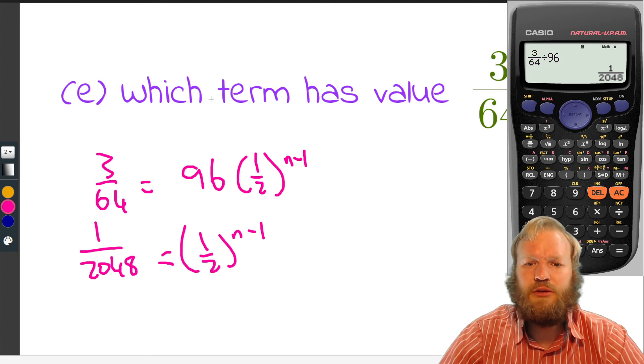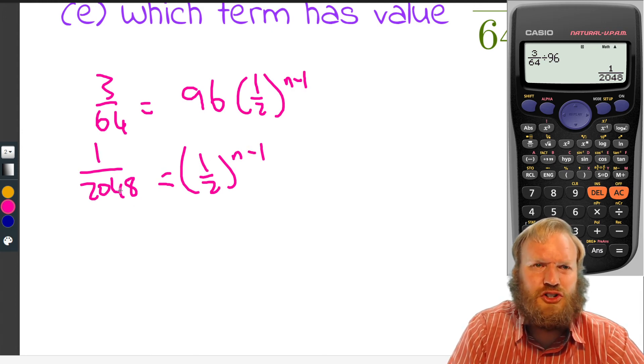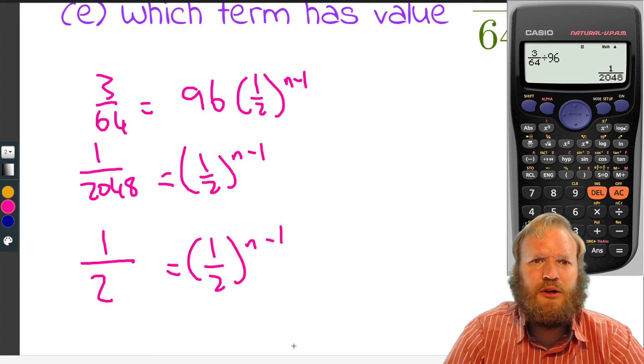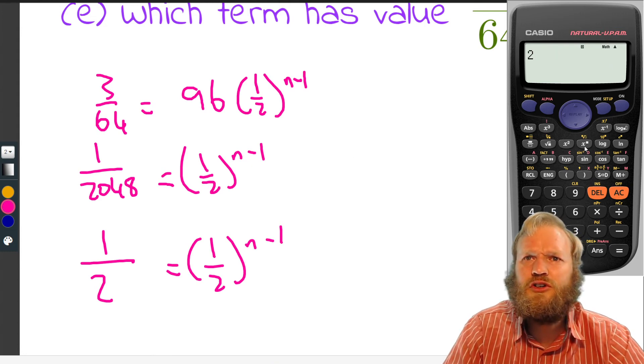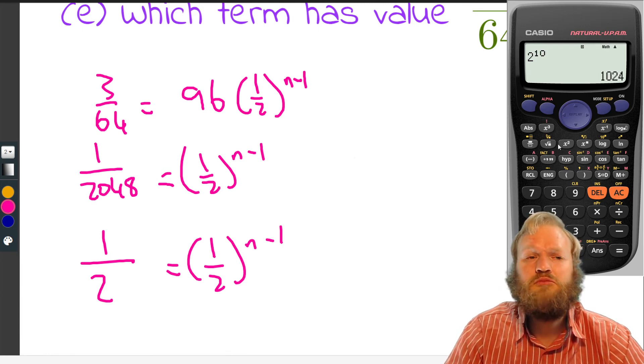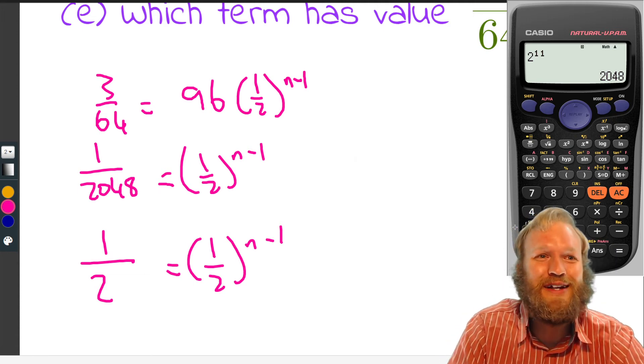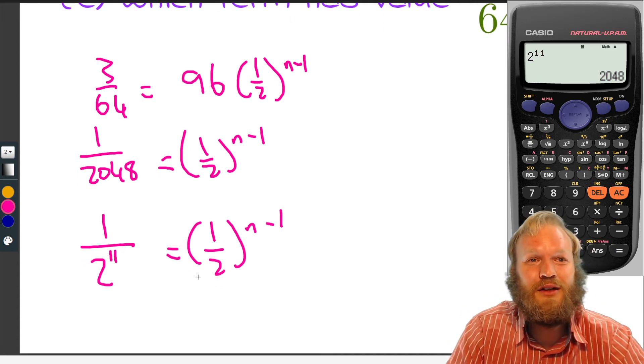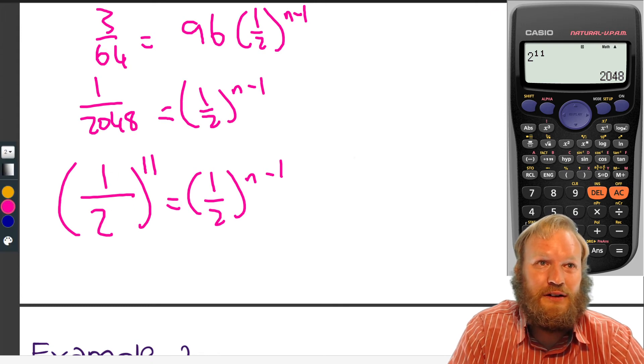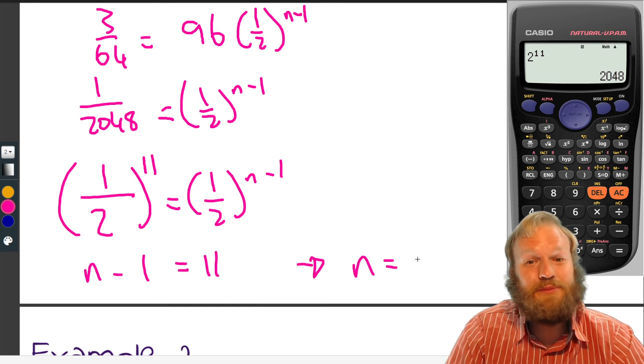One over 2048 equals a half to the N minus one. So we don't have a great strategy at the moment to solve this, except to kind of try some numbers. Well, a half to the N minus one. What is 2048 is a power of two. So if these two could be the same, that would be beautiful. And let's just try some numbers. So two to the power of, let's try 11. No, wait, I wanted to try 10. 1024. Okay. So we're not quite there. So it must be higher. 11, 2048. Seems I just knew where it was going to go already. So this is two to the 11. So in other words, this to the 11 means that N minus one must be 11, which means that N must be 12.